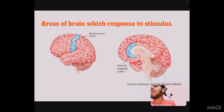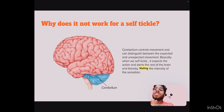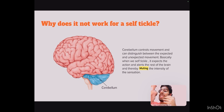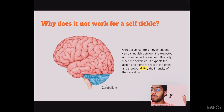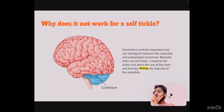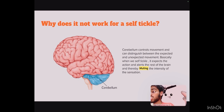Now coming to the main point: why does tickling not work for a self-tickle? The reason is the cerebellum — it spoils all the fun. The cerebellum controls movement and can distinguish between expected and unexpected movement. When we self-tickle, it expects the action and alerts the rest of the brain, thereby muting the intensity of the sensation. The tickle response requires a level of surprise and tension that we just don't get from a self-tickle, because our brain already knows about it and does not give a response. That is why we don't laugh when we self-tickle.